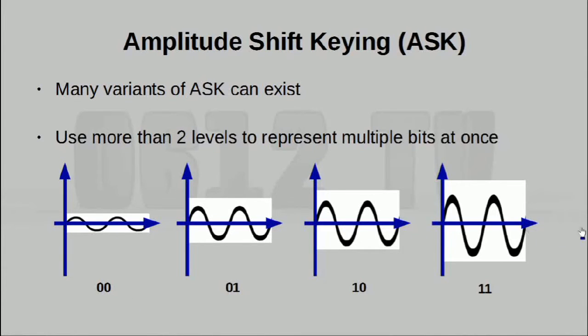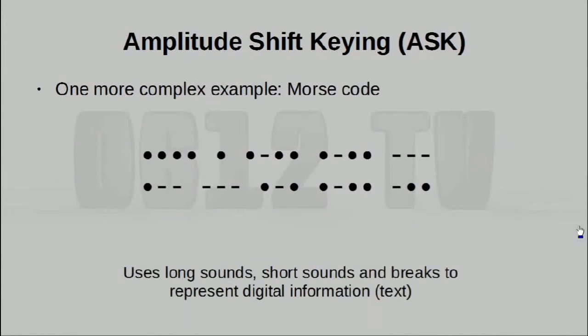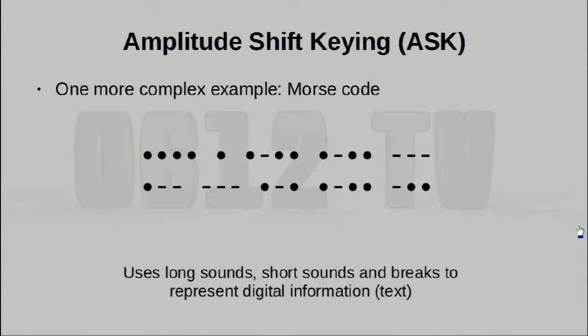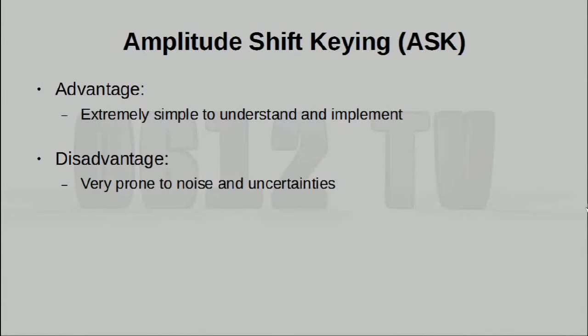Another variant is to actually use more than two different levels of amplitude to represent multiple bits at once. Since we have four distinct states, then we can actually transmit two bits at a time. You can of course keep piling on the complexity, and one slightly more complex version of amplitude shift keying is none other than Morse code. Now, Morse code has more than two distinct states. There are actually three of them, long sounds, short sounds, as well as breaks. So actually this goes a little bit beyond shifting amplitude for the purposes of keying, we're also changing the duration of individual sounds. In terms of the advantages and disadvantages of this technique, it is extremely simple to understand and implement. All we have to look at is the intensity, be it the loudness or the brightness of a signal. Of course, because of its simplicity, that makes it quite prone to noise, as well as other uncertainties, which as mentioned earlier, can include the distinction between a loss of signal versus a low state.